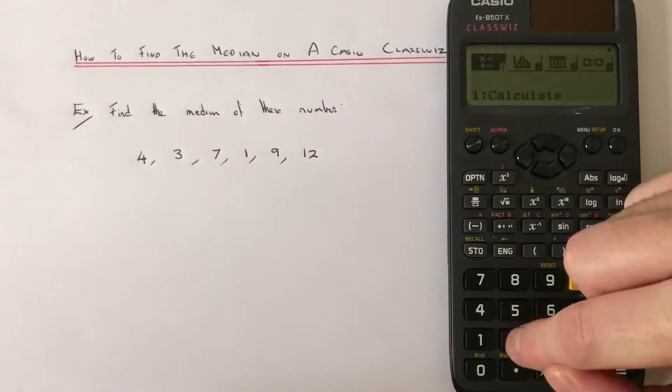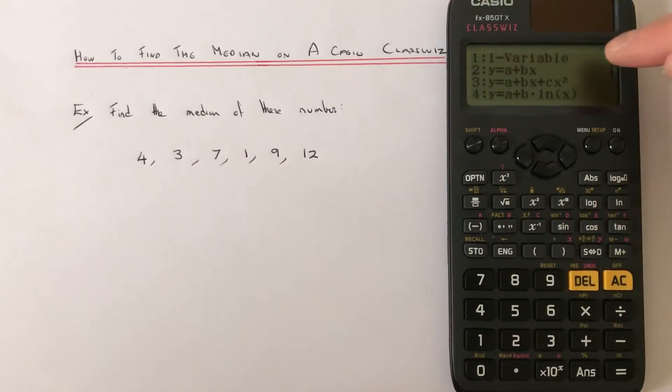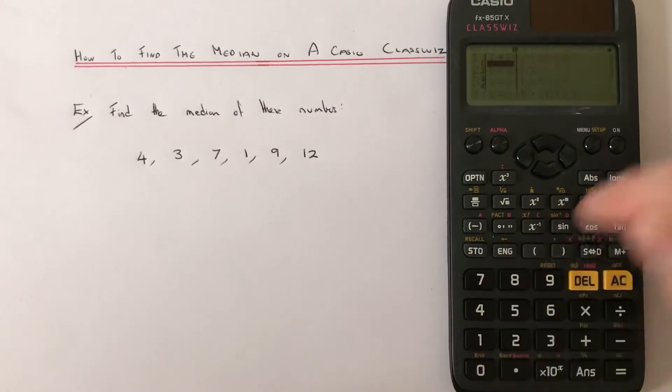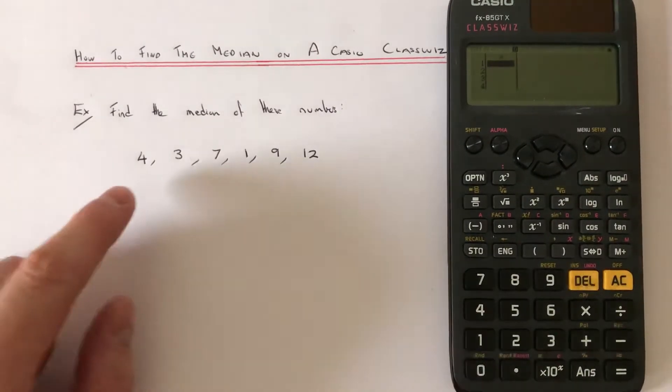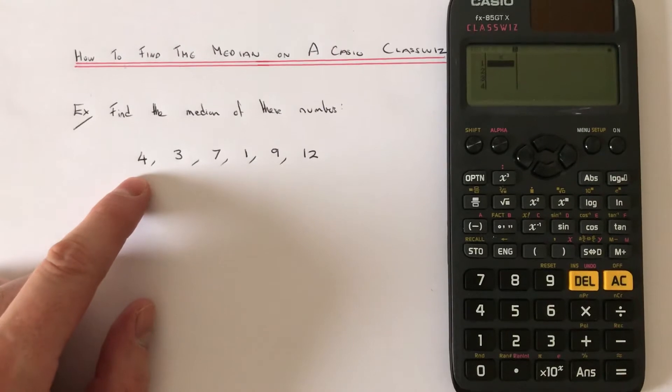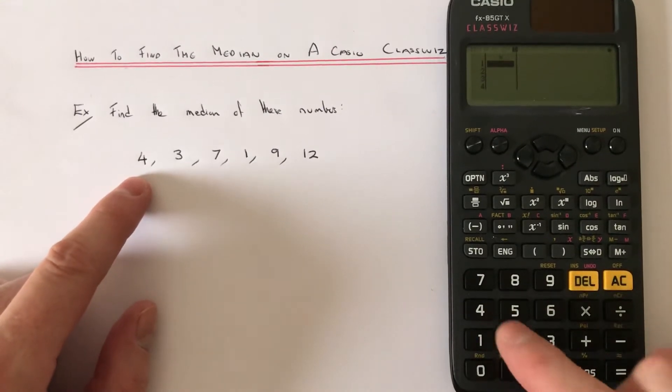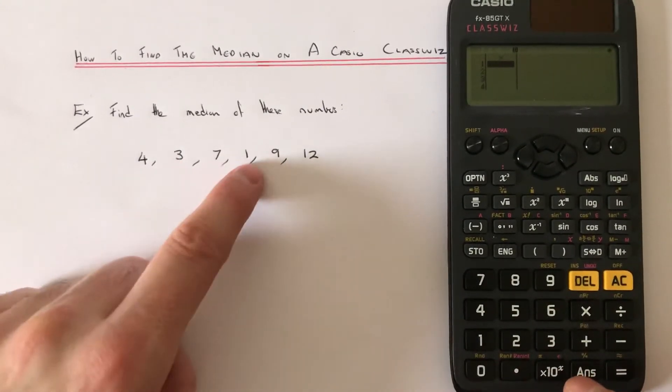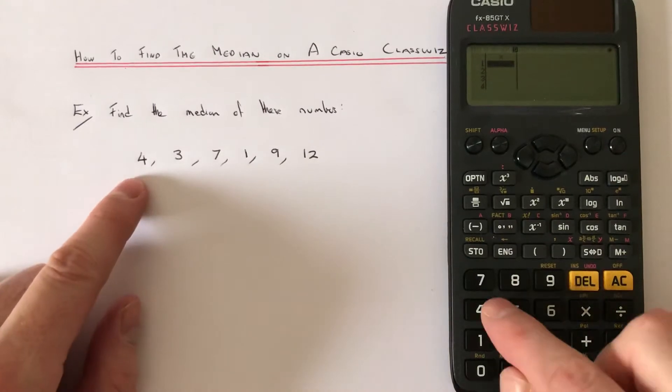Menu, number two, and select number one for one variable data. We just need to type in our data set now. We've got to find the median of 4, 3, 7, 1, 9, and 12.